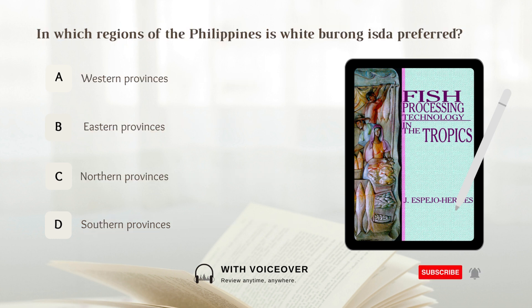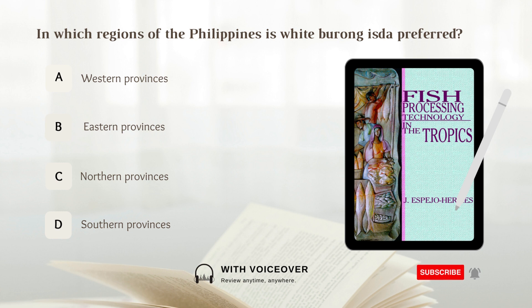In which regions of the Philippines is white burong isda preferred? A) Western provinces. B) Eastern provinces. C) Northern provinces. D) Southern provinces.